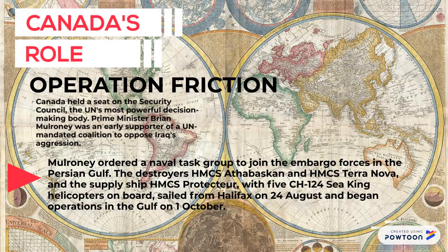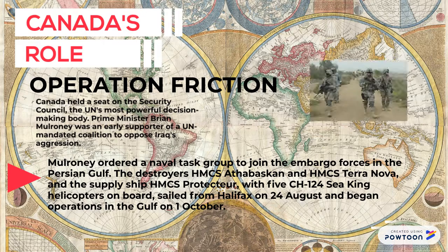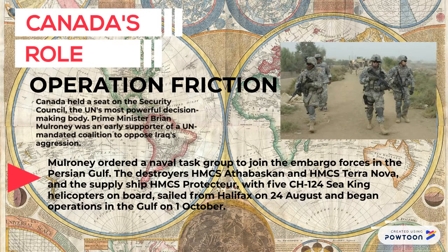Canada's role: Operation Friction. Canada held a seat on the Security Council, and Prime Minister Brian Mulroney was an early supporter of a UN-mandated coalition to oppose Iraq's aggression. He ordered the naval task group to join the embargo forces in the Persian Gulf.